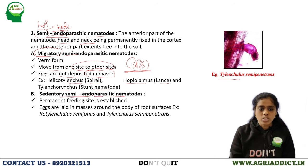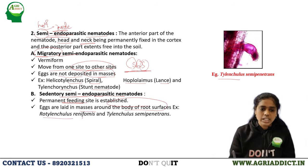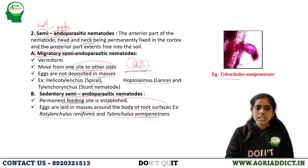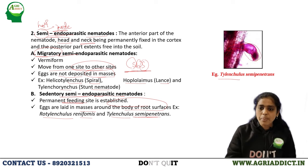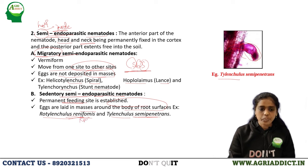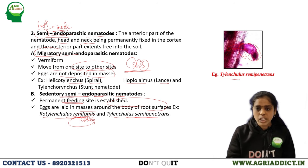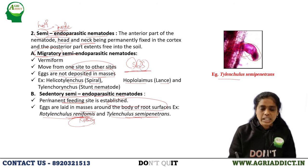Sedentary semi-endoparasitic nematodes establish a permanent feeding site, and eggs are laid in masses around the root surface. Major examples are Rotylenchulus reniformis and Tylenchulus semipenetrans. Whenever sedentary semi-endoparasitic nematodes start feeding, the posterior part becomes bulged or swollen. In Rotylenchulus reniformis, the body assumes a kidney shape — hence the name reniform nematode. Similarly in Tylenchulus semipenetrans, the posterior body of the female becomes bulged.